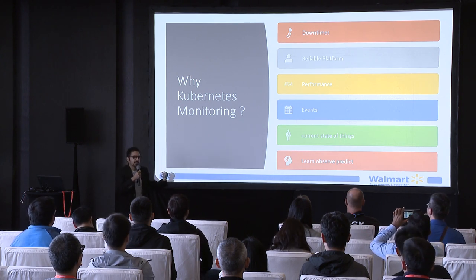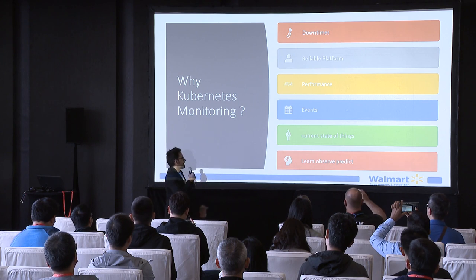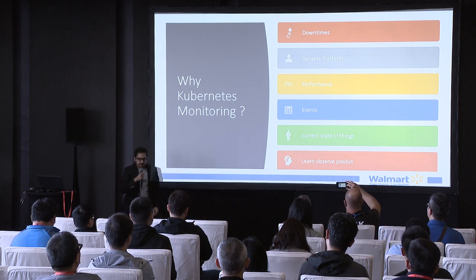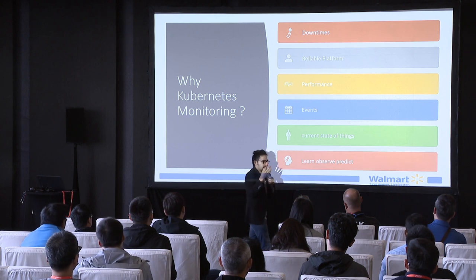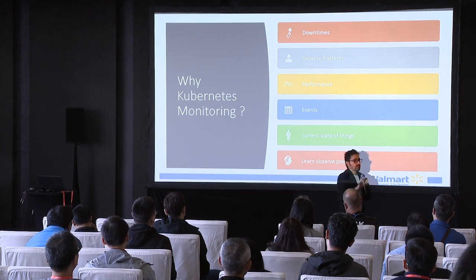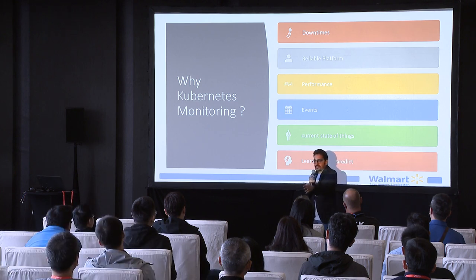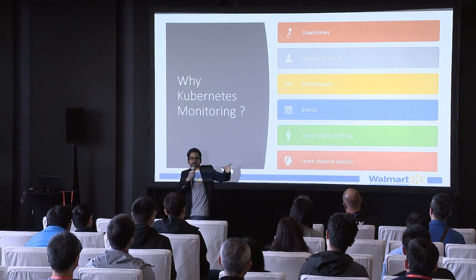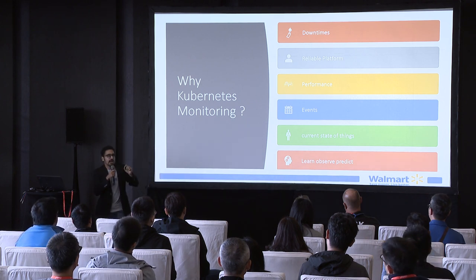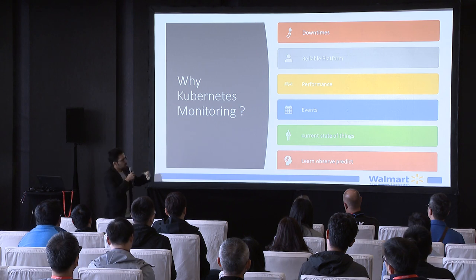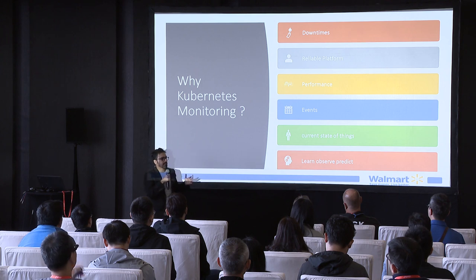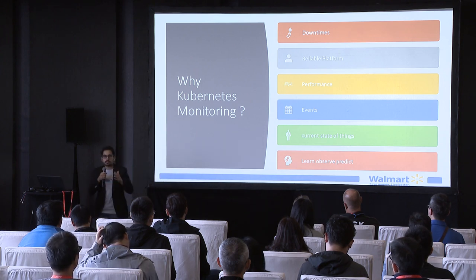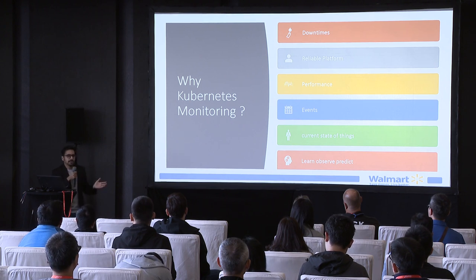Next is events — if you want to monitor specific events, Kubernetes monitoring is required. Learn, observe, predict: consider a machine learning engineer who has submitted a model taking four days to train. The pod has to run for four days. After three days, if a pod goes down, the training already done goes to waste. We need to actively monitor all running pods and make sure pods don't go down. For that, we need extensive monitoring — millions of metrics being sent so we can predict and observe failures.